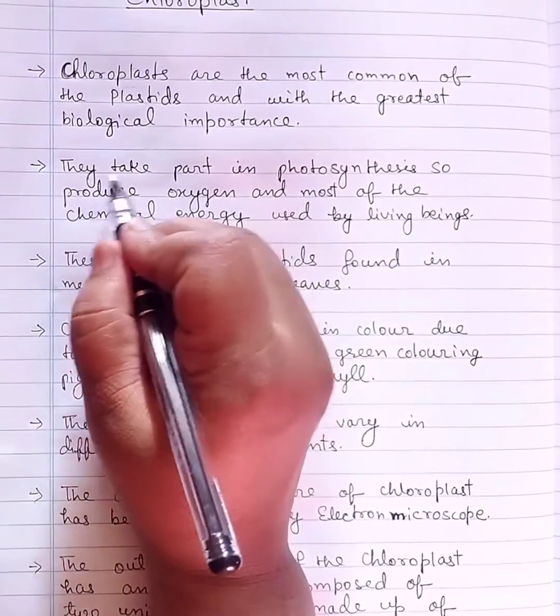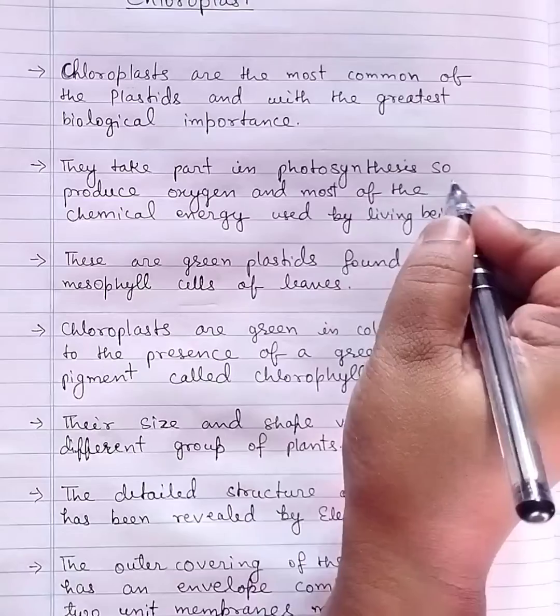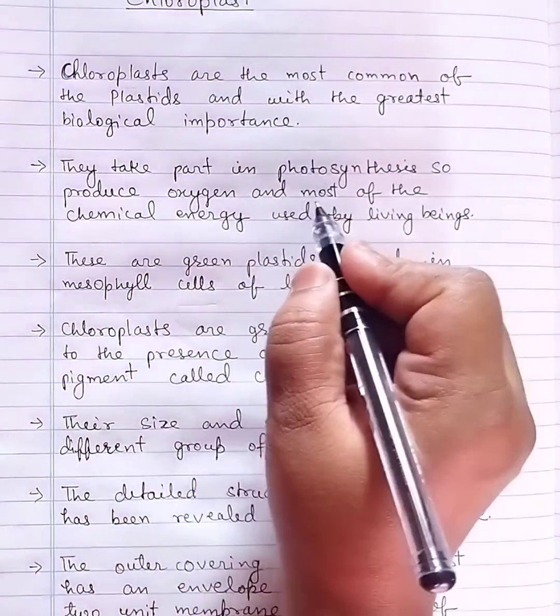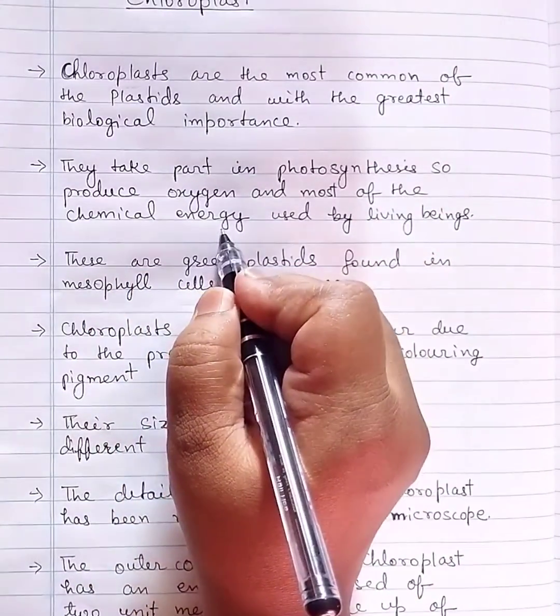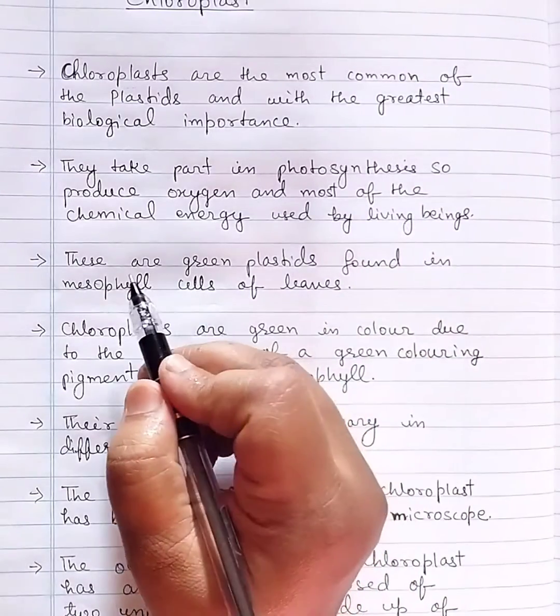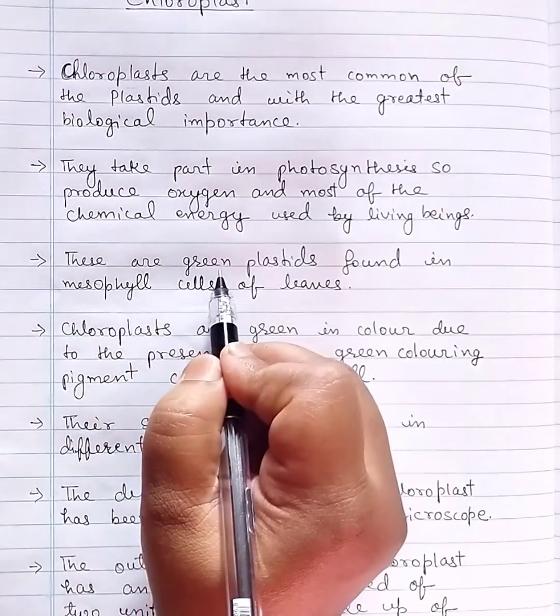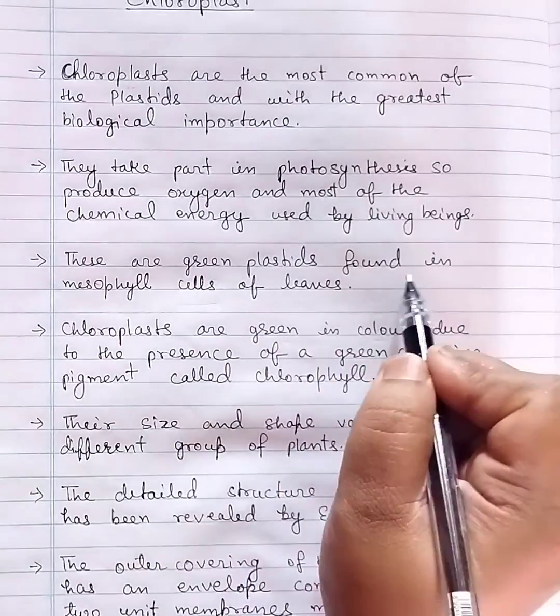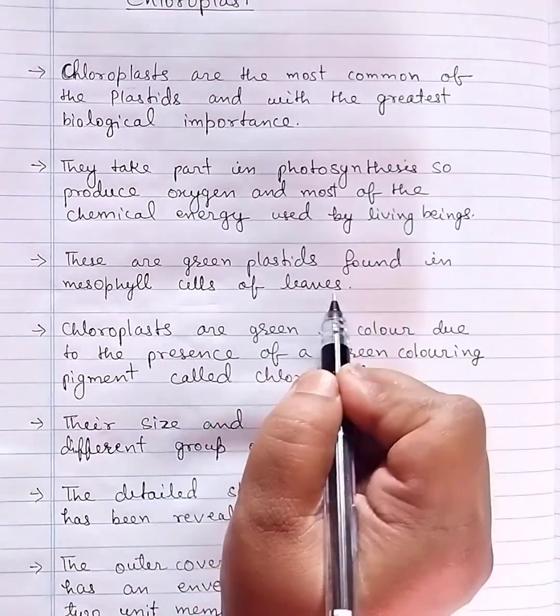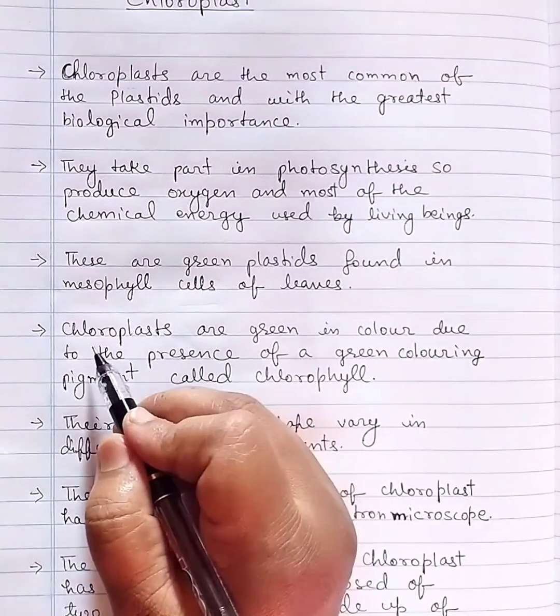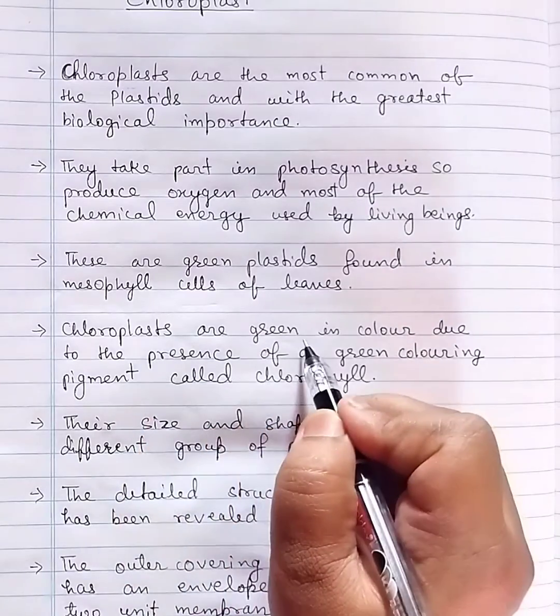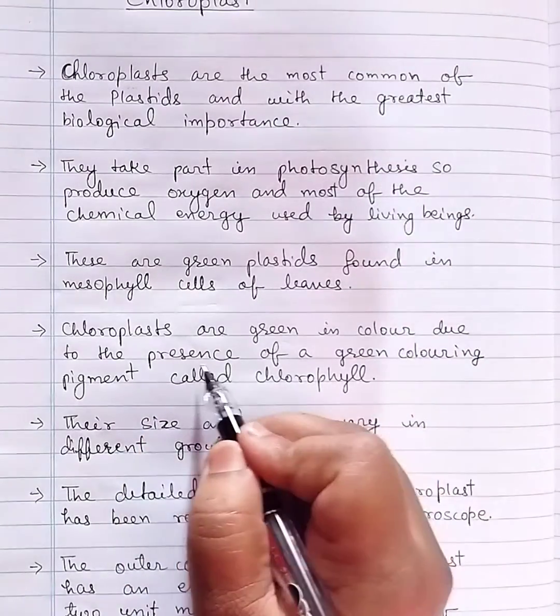Chloroplasts take part in photosynthesis to produce oxygen and most of the chemical energy used by living beings. These are green plastids found in mesophyll cells of leaves.